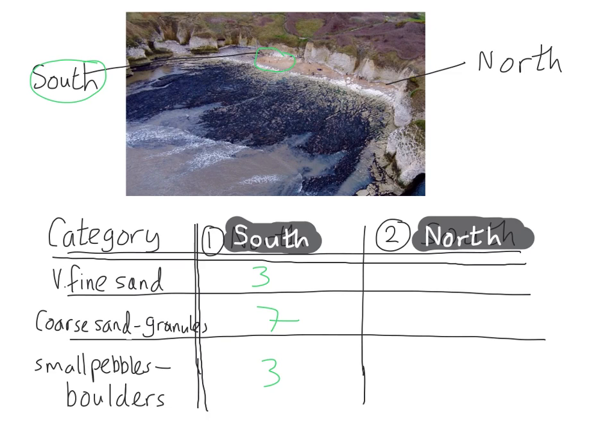We then go off to the north end of the beach. And in this area here, we put down 13 quadrats. And there is one quadrat only with very fine sand, two with coarse sand granules, and we have 10 which have small pebbles to boulders. And this is your observed data, your raw data.